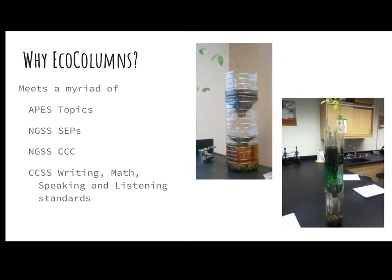There are a couple of different ways you can build eco-columns. If you look at this paper here, we have this method — the one I'm going to go through, which uses water bottles, gallon-sized water bottles. The other method is using two-liter bottles. Either method works. I prefer the water bottles because they are more sturdy. My picture here shows one with really dirty water, which I'm going to teach you how to avoid.